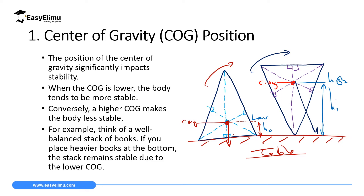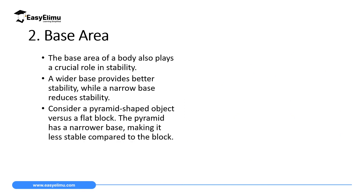For a body to be stable it must have a low position of the center of gravity. If it has a high center of gravity it will be unstable. The second factor that affects stability of a body is the base area. If the base area is wide then the body is more stable, and if the base area is small then that body is less stable.